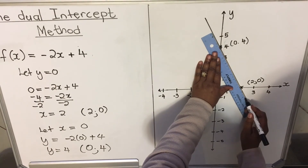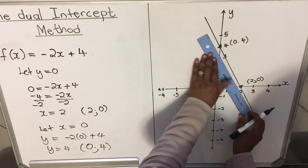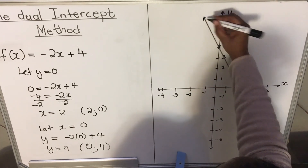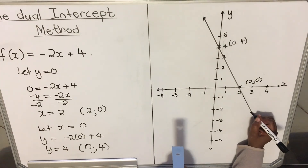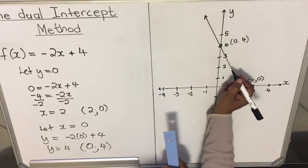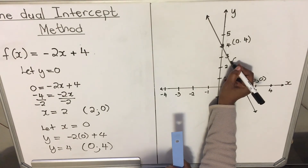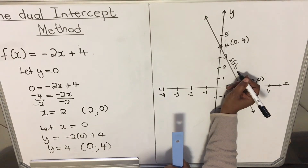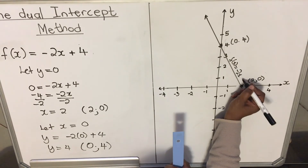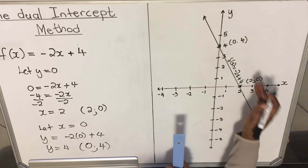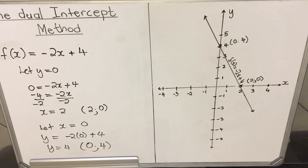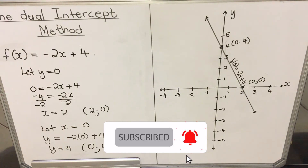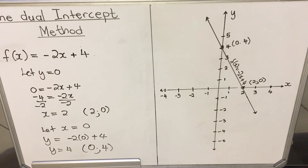When you draw the line, make sure it cuts the y-axis and the x-axis. Don't draw a graph that ends in the middle — put arrows to show that it continues. Then write the function on top of the line: f(x) = -2x + 4. This is how you do the dual intercept method, and this is the end of our lesson. Thank you for watching.